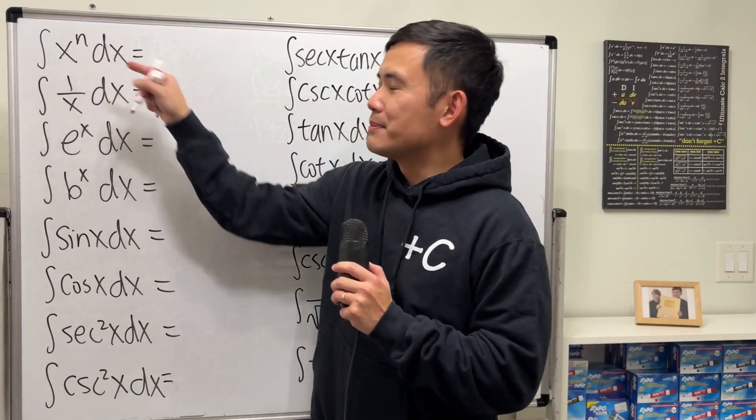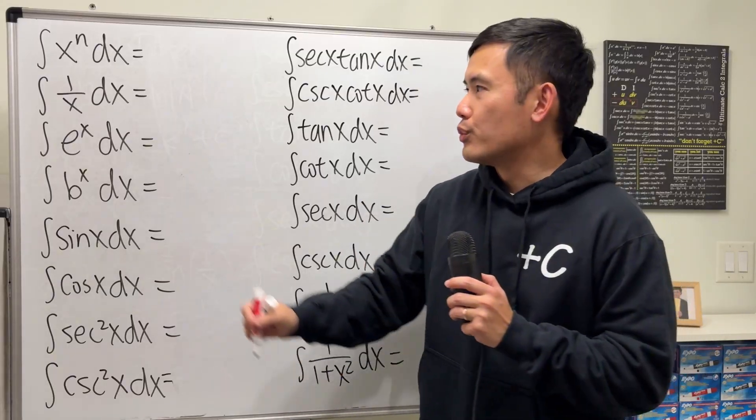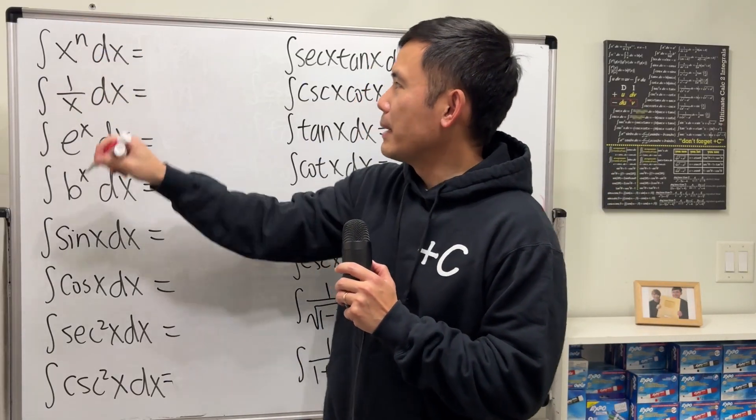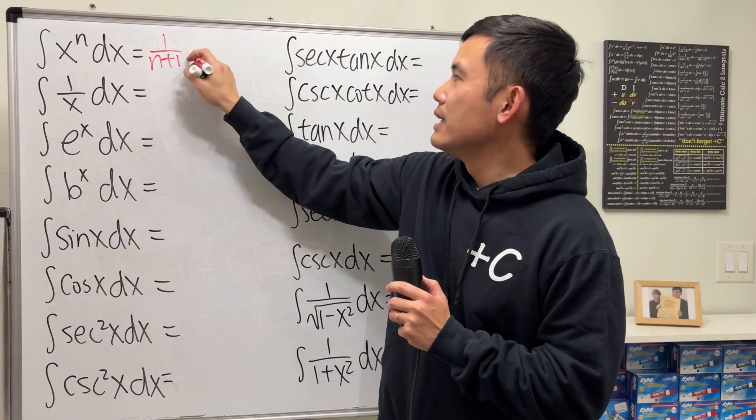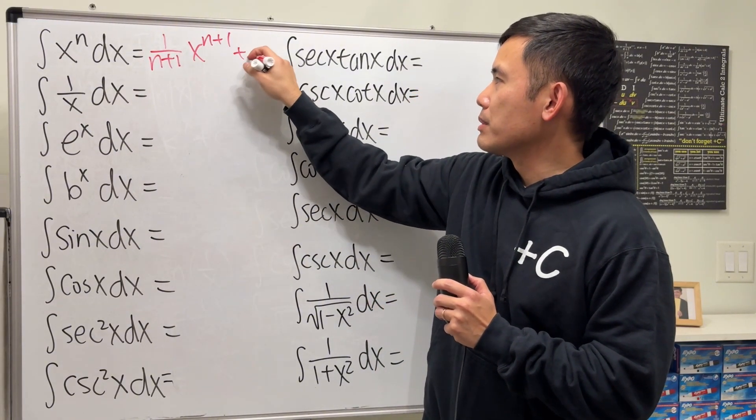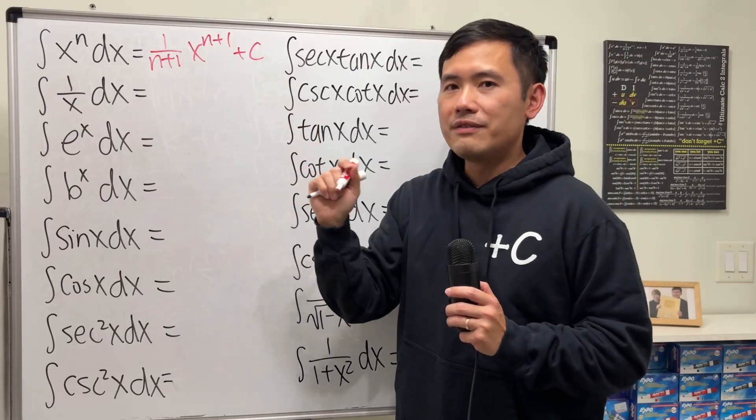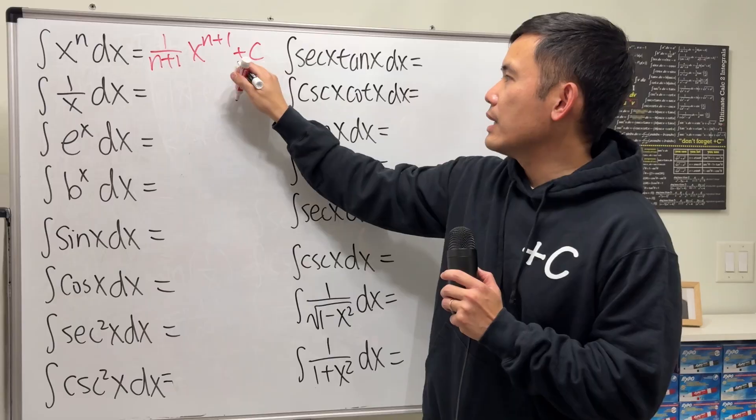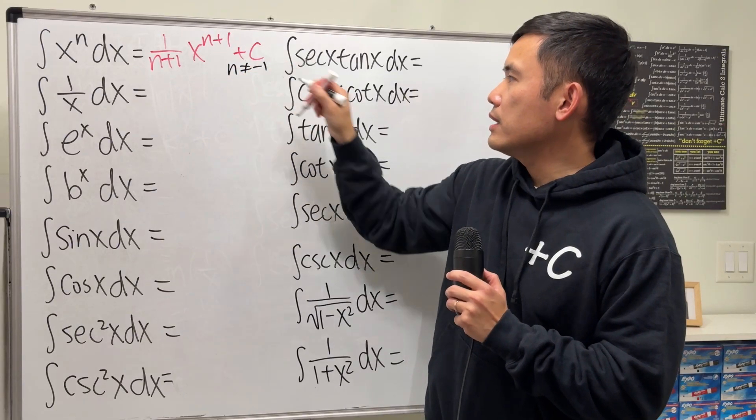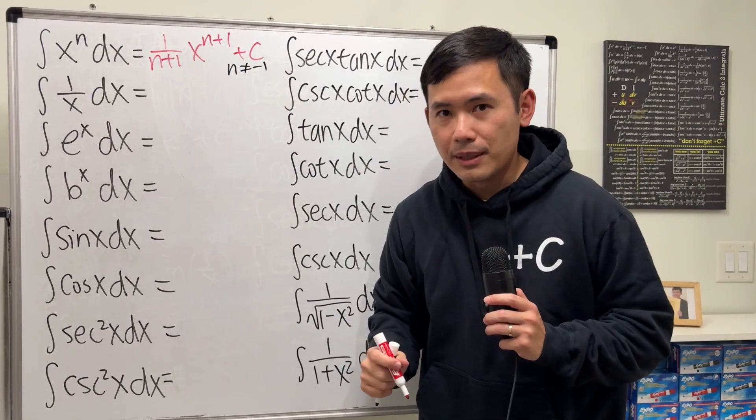The integral of x to the nth power - this is the reverse power rule. We add 1 to the power and divide by the new power. The answer for this is 1 over n plus 1, times x to the n plus 1, plus C. Here though, we have a small condition because we have n plus 1 on the bottom. Make sure that n cannot be equal to negative 1, because otherwise we are dividing by 0.